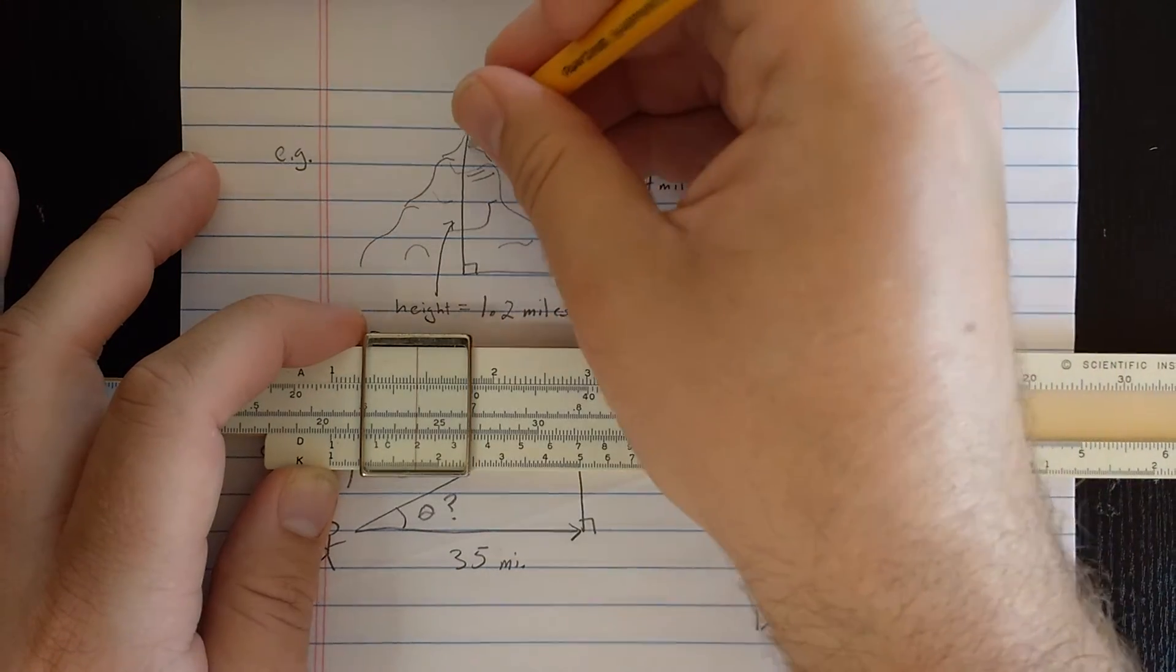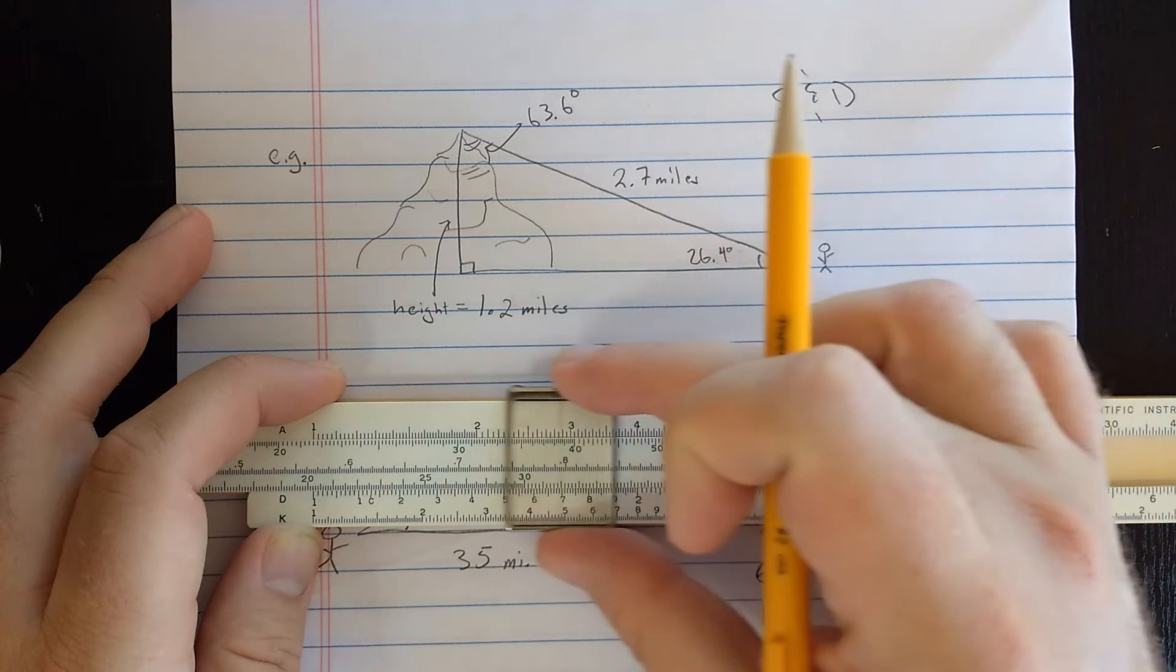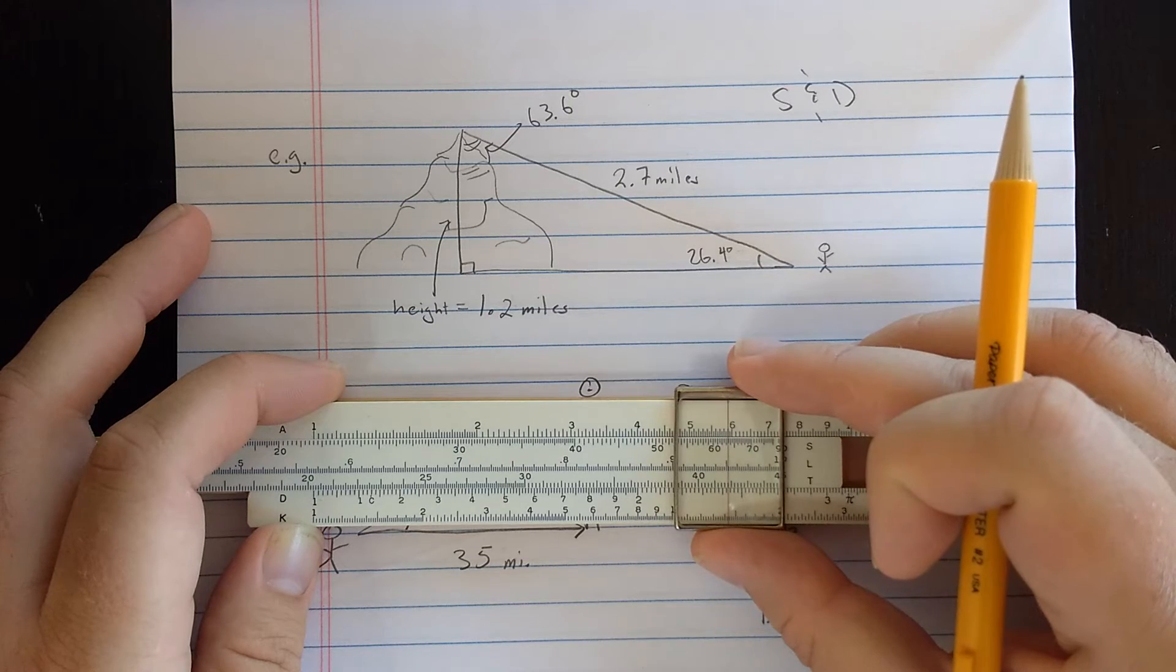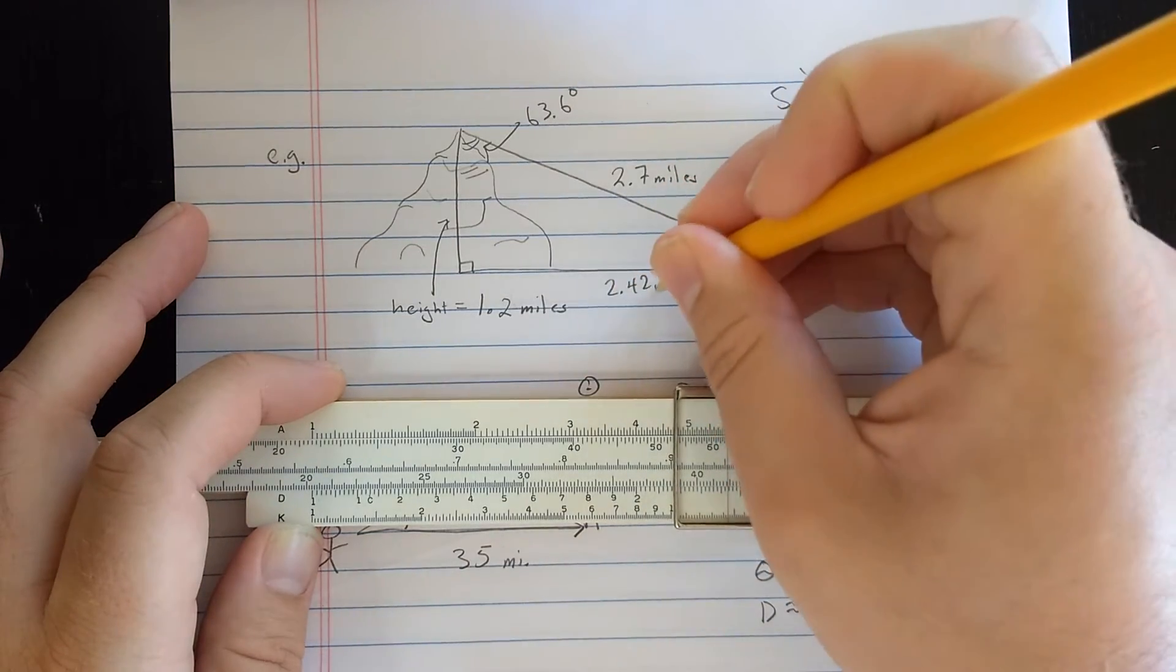And once I know that 26.4, I can compute the complement here. This angle should be 63.6 degrees, so that those two add up to 90 degrees. But once I know that angle, I can compute the length of the side across from it by moving the slide to that 63.6 degrees. It's getting a little fine here, but about there. And underneath, I'm reading that length as 2.4, about 2.42, that length on the bottom.